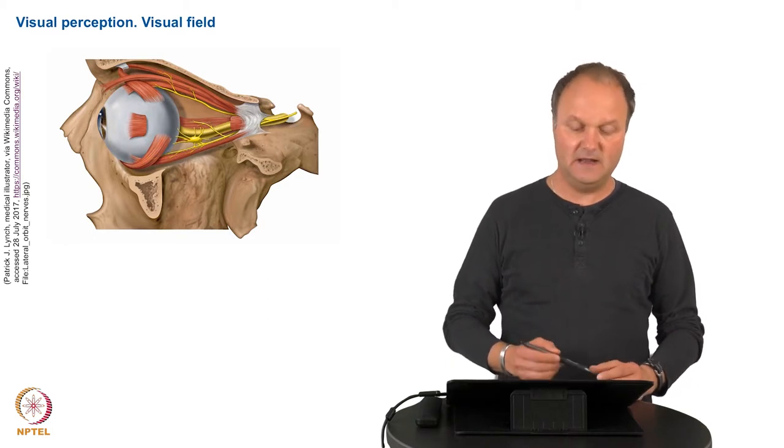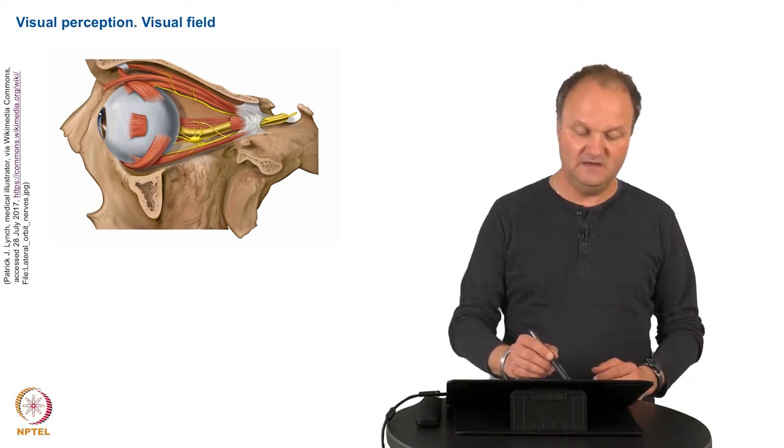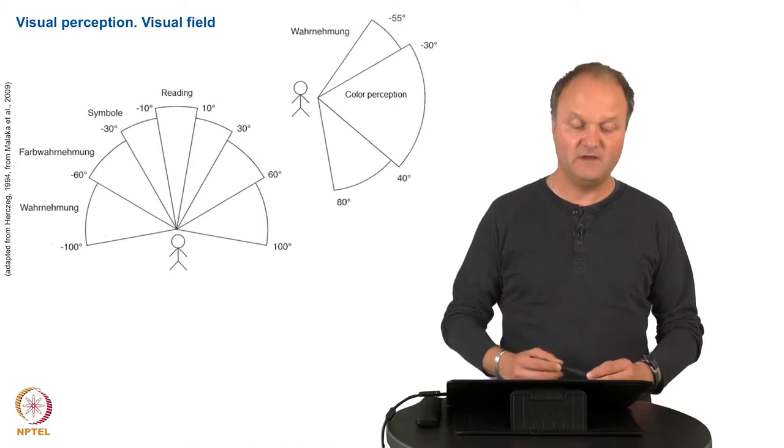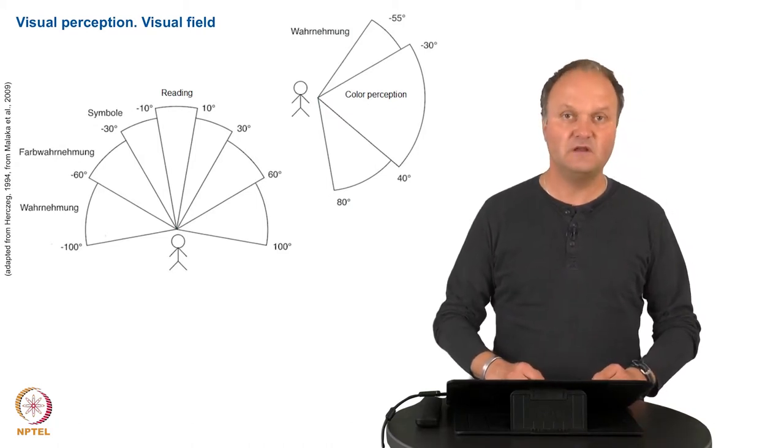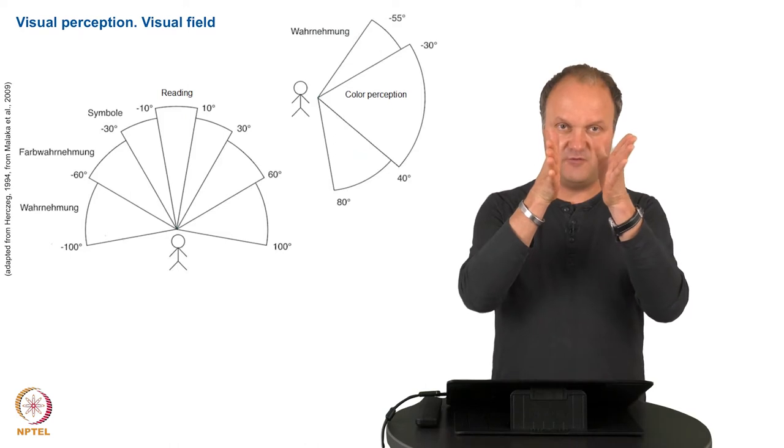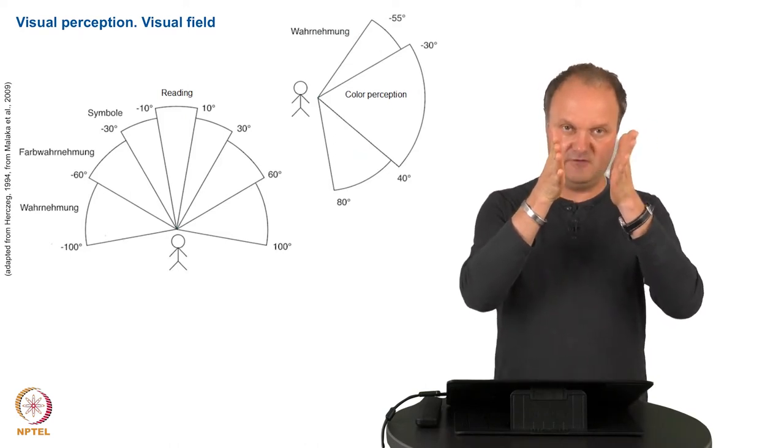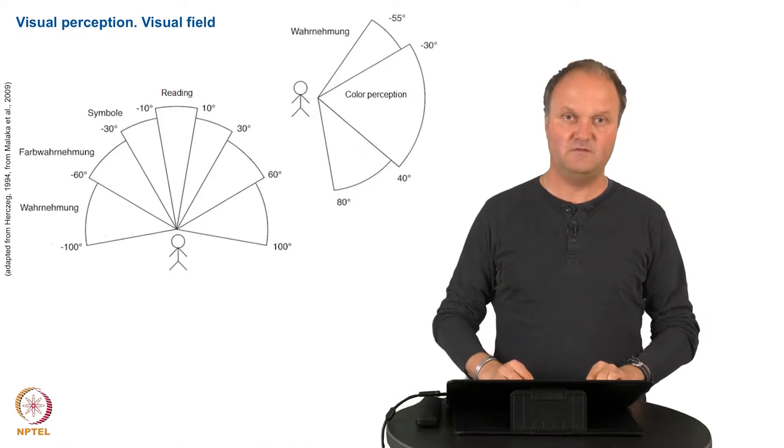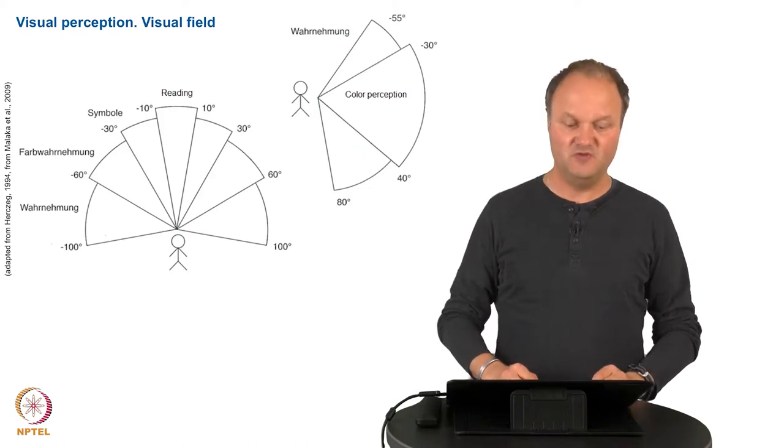These movements of the eye help us to see different areas around us. And this is done with different degrees of precision. We call that the visual field. The visual field is most precise in the middle up to a degree of approximately plus or minus ten degrees from the central point. This is the area where we can for example read.